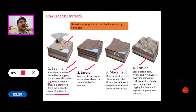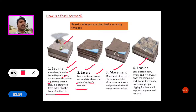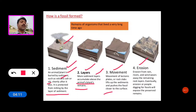The second type is layers. More sediment layers accumulate above the animal or plant's remains. The third type is movement — movement of tectonic plates, or rock slabs lift up sediments and push the fossil closer to the surface.